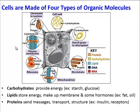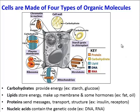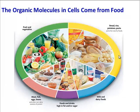Proteins do all sorts of things for cells — they send messages, transport materials, and provide structure. You can see proteins in various parts of this plant cell. And finally, nucleic acids contain our genetic code. Now, where do these molecules come from? They come from our food — that's why you have to eat.